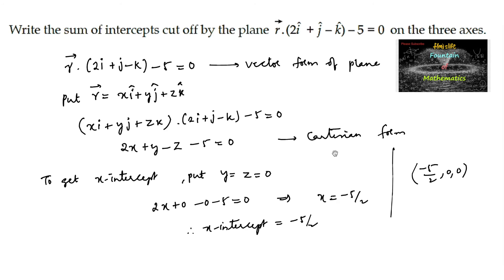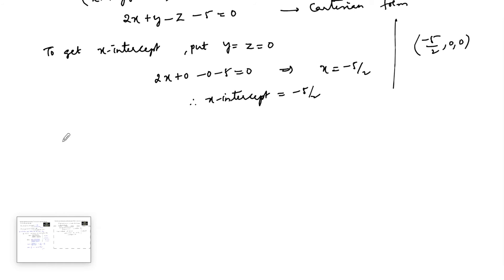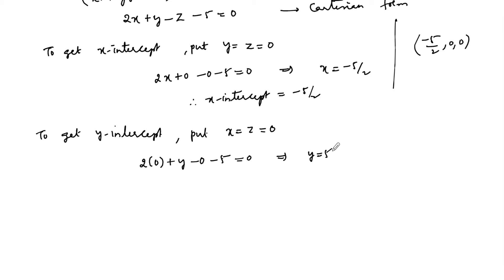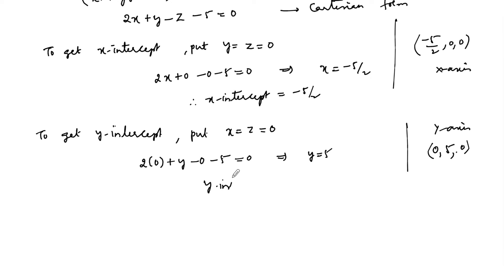Now to get the y-intercept, put x = 0 and z = 0. We will have 2(0) + y - 0 - 5 = 0, which implies y = 5. Therefore the point on the y-axis is (0, 5, 0), and the y-intercept is 5. Let us call this b.